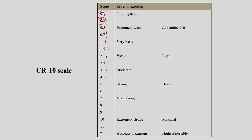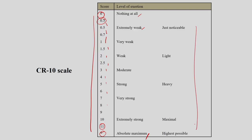The CR10 scale has numerical values along with verbal expressions. At 0 it represents no exertion at all — the person is completely relaxed. After 11, there are no further numbers — only star marks indicating absolute maximum, which is entirely dependent on the person. So for two different persons, the maximum exertion level may be different since it is perceived by that individual.